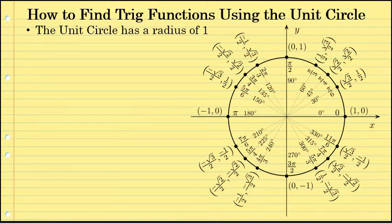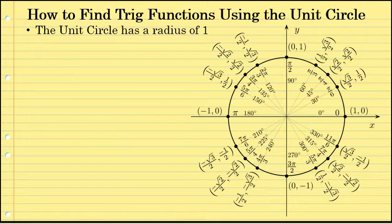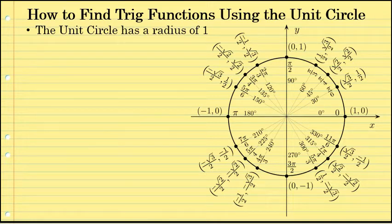One advantage is that a calculator is not required. A second advantage is that when finding the value of all trig functions of angles on the unit circle, you'll be able to represent that value exactly. The value of most trig functions are irrational, but on the unit circle you can represent that value exactly, whether it's with a square root or whether the answer is actually a rational number.